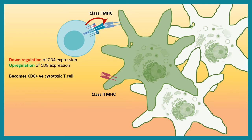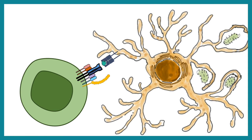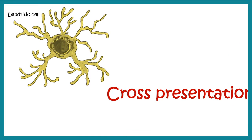The cytotoxic T cells generated in the thymus are naive — they have not yet encountered any pathogen-derived antigen. These naive cells need to be activated first. Just as helper T cells are activated by dendritic cells, cytotoxic T cells can also be activated by dendritic cells through a process known as cross-presentation.